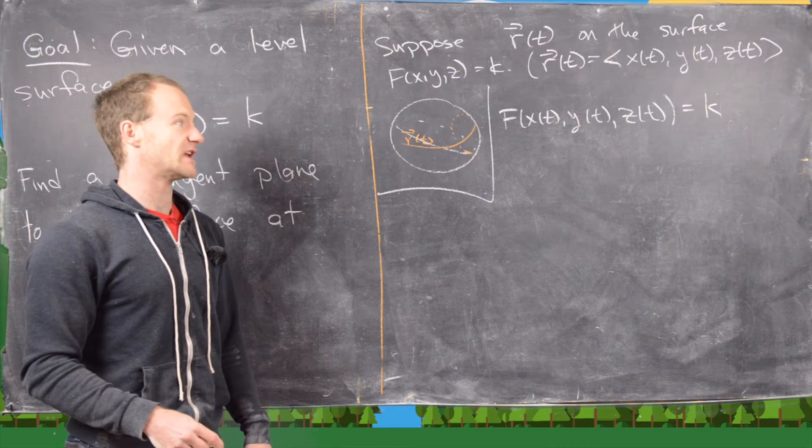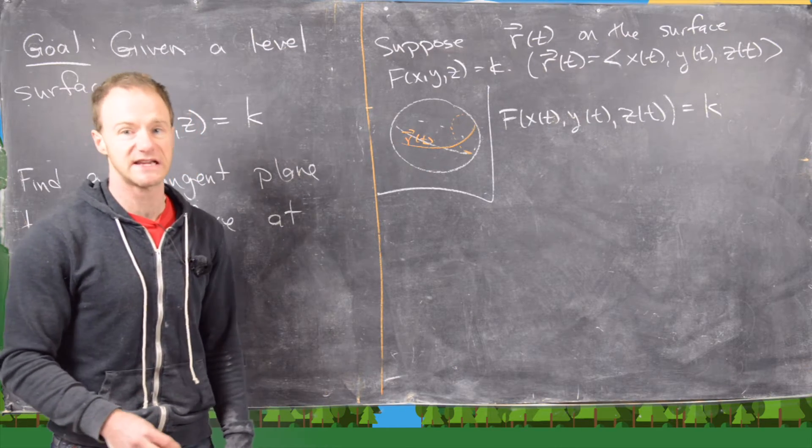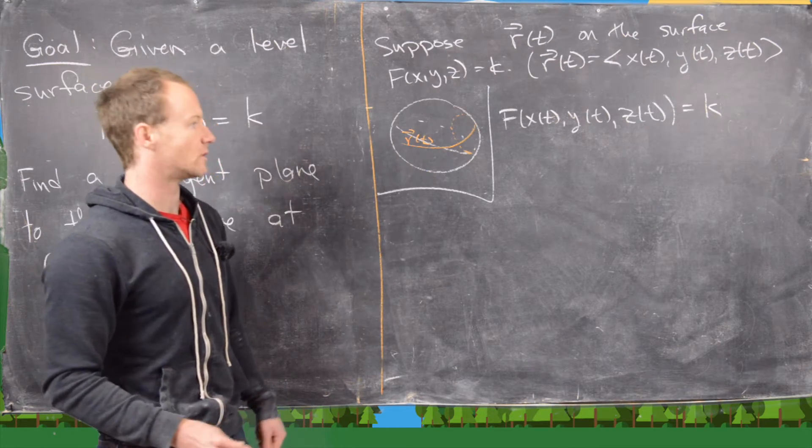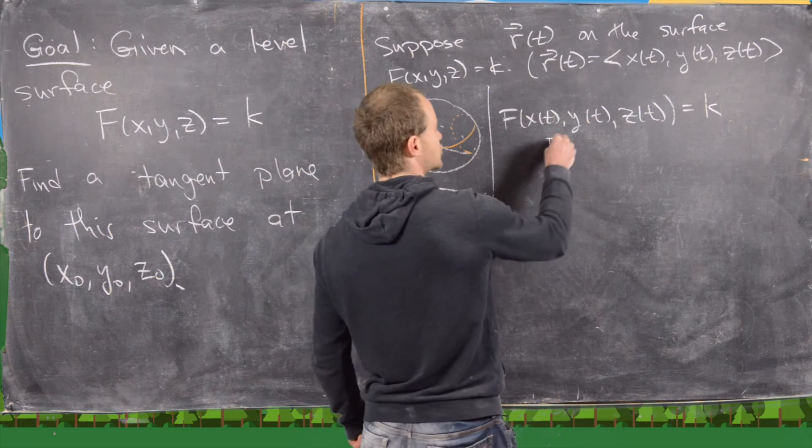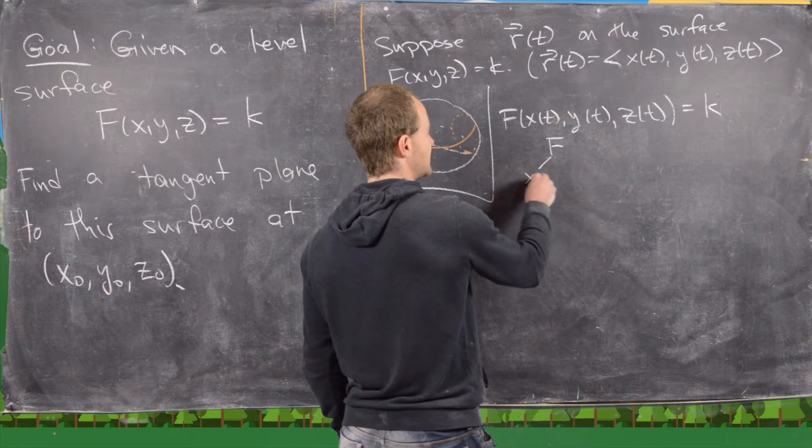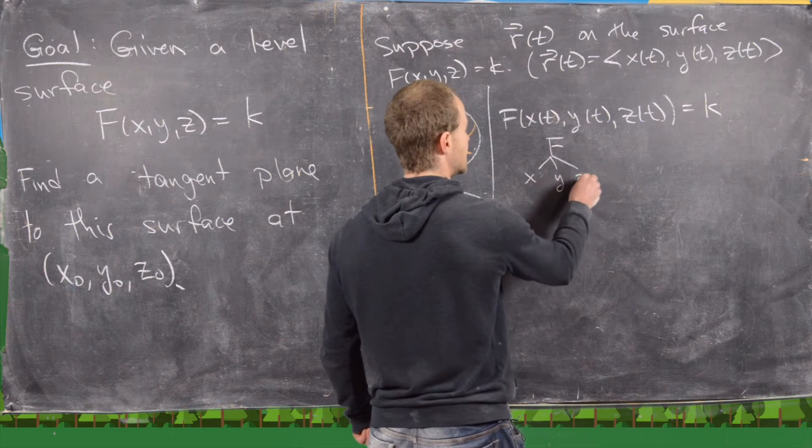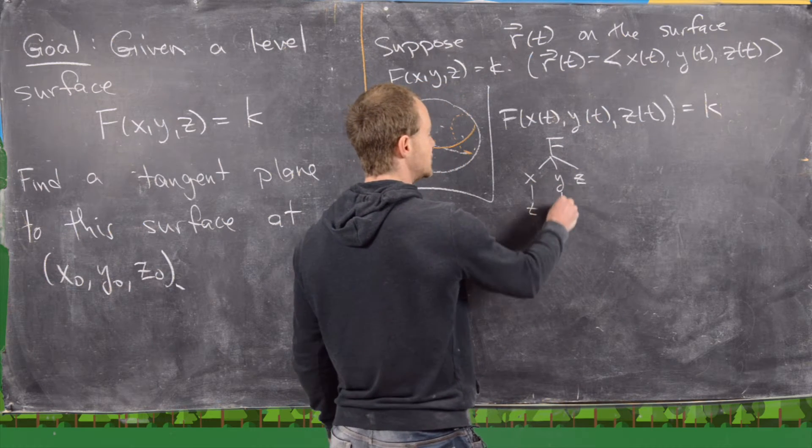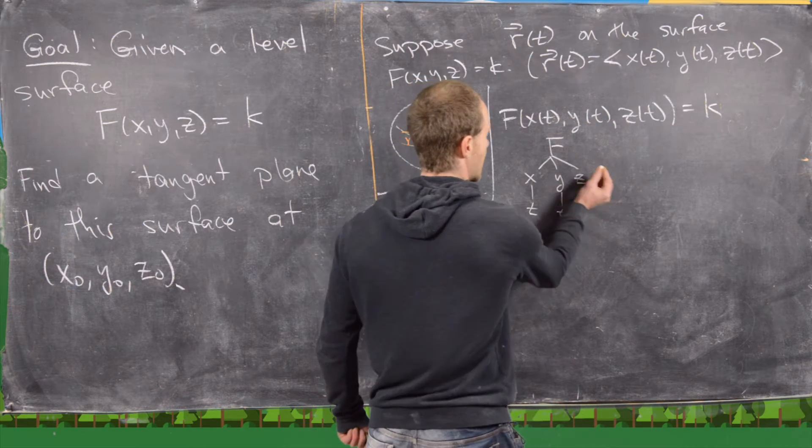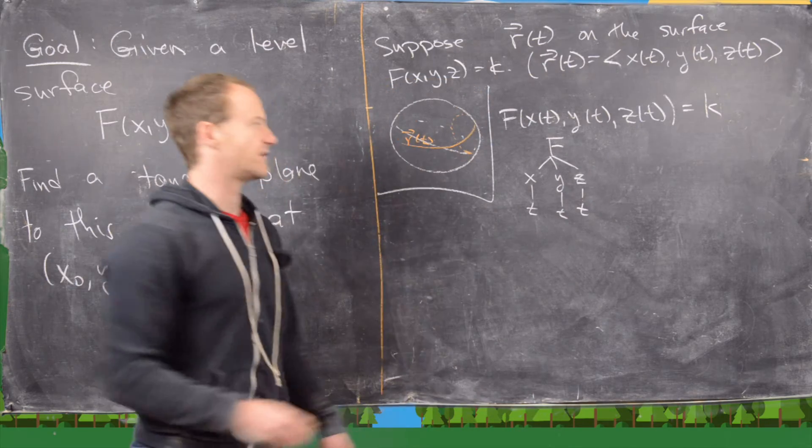Now we're going to differentiate this thing with respect to t using the chain rule. So notice we've got this tree dependence of f. f depends on x, it depends on y, and it depends on z, and each of those depend on the underlying variable t.